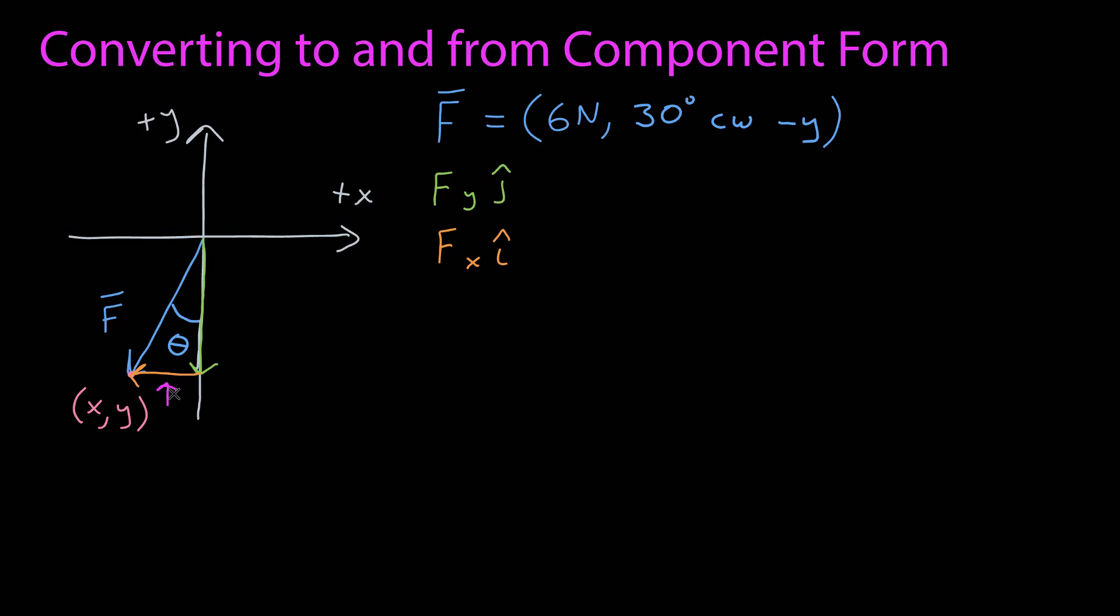which is some scalar f sub x multiplied by i-hat, the Cartesian basis vector pointing in the positive x direction. I know that those scalars correspond precisely to those values of the coordinate at the point of the tip. So that's another way of looking at what I'm trying to find.